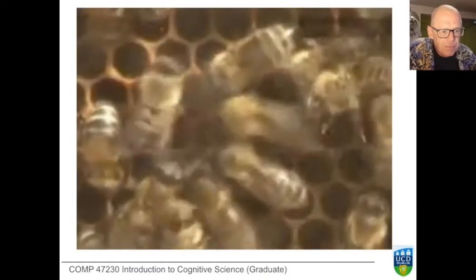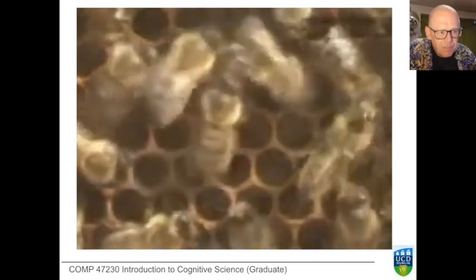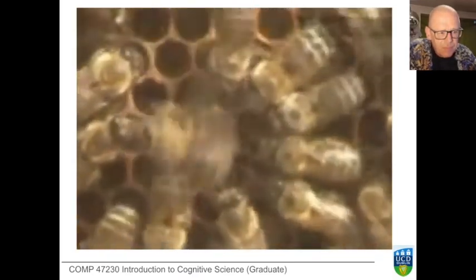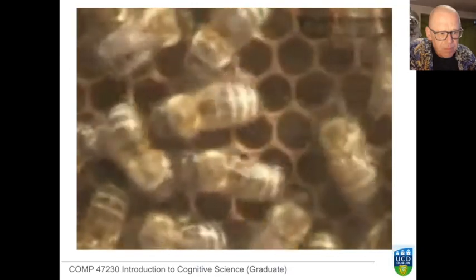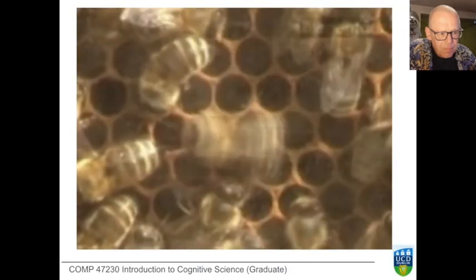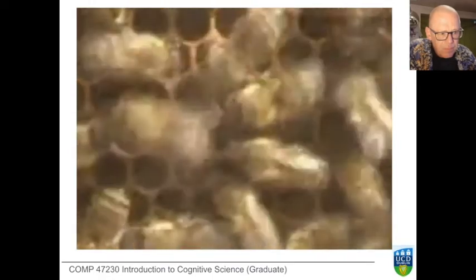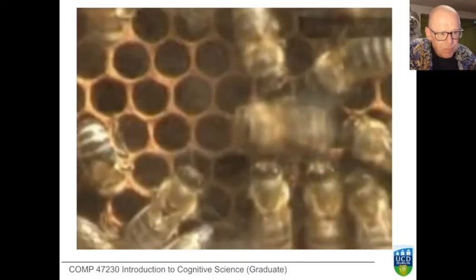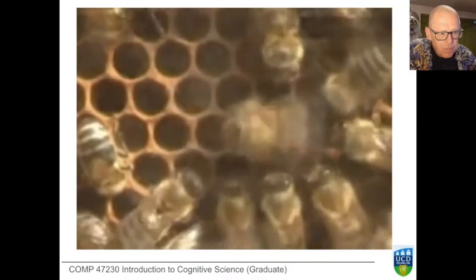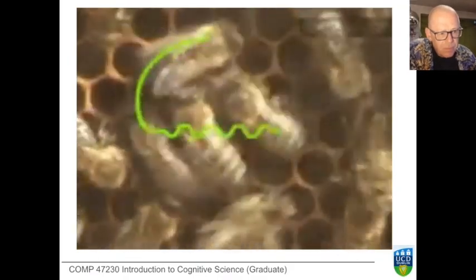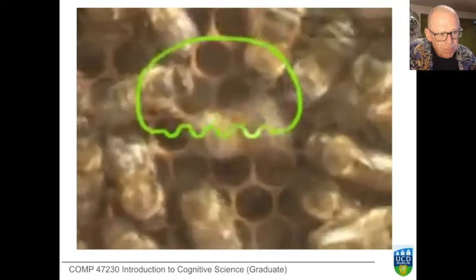Honeybees have some fascinating abilities, among them being able to communicate by performing a unique dance. It informs hive mates where a newly discovered food source is located. Every cycle of this waggle dance roughly describes the shape of a figure eight. The bee only waggles on part of its route — the straight run, indicated here by the waved line.